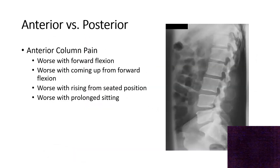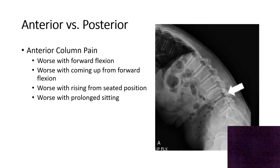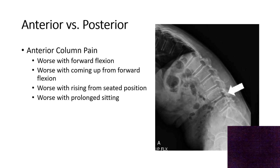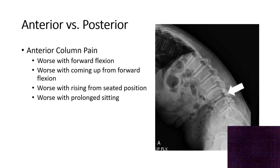Going into anterior column pain first: when you go into flexion, you open the joints in the back and load the discs in the front. If you have anterior column pain, your pain will worsen when you bend forward, when you come up from bending forward, when lifting from the ground, or when rising from a seated position — because we tend to lean forward as we rise. Prolonged sitting with poor posture also bends the back and loads the anterior column elements, causing significant pain.